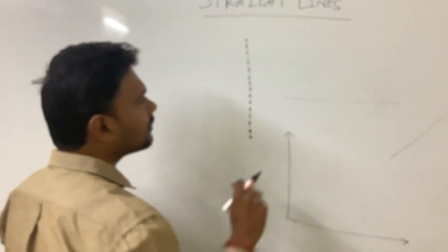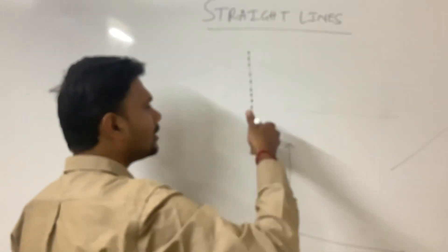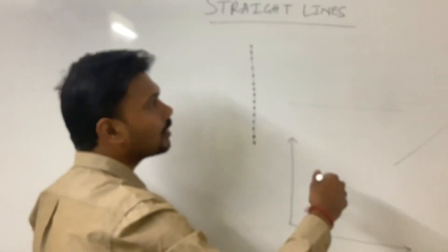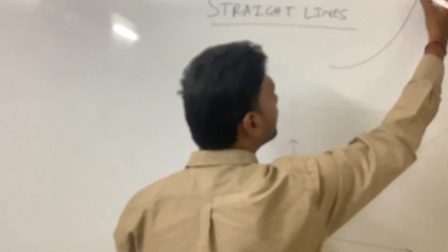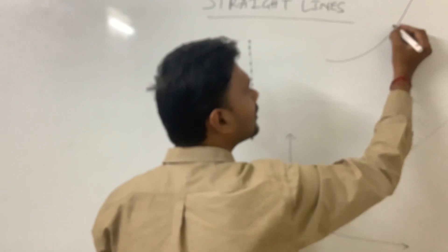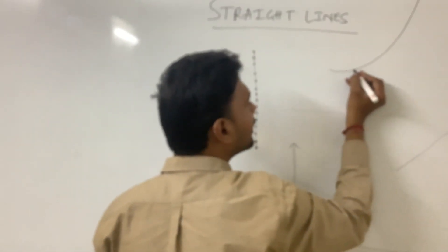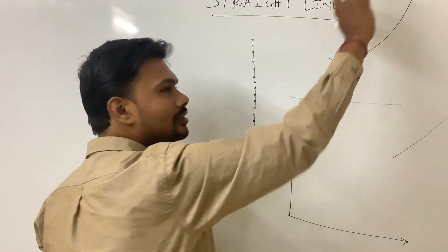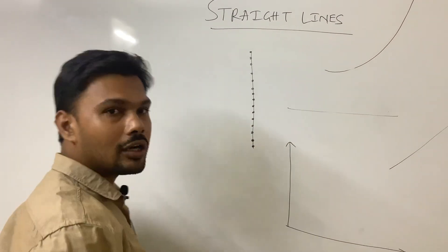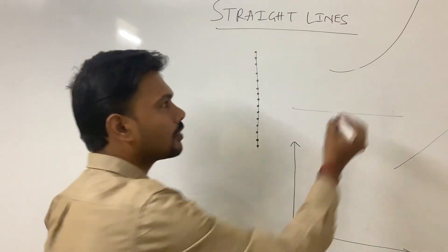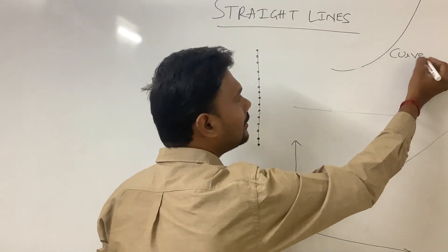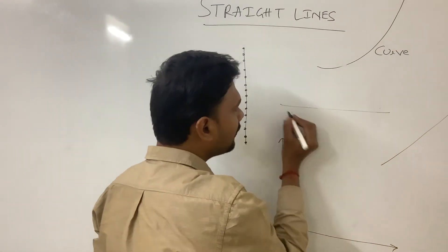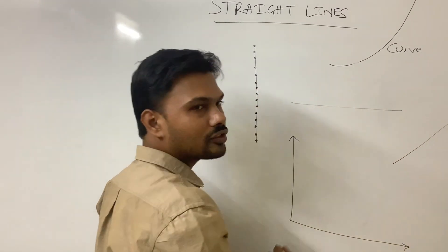The difference between a line and a curve: a vertical line, horizontal line, and inclined line are straight lines. A curve is something whose direction is continuously changing — you go in one direction, then change direction, then go vertically upwards. A straight line, by contrast, has a constant direction throughout.